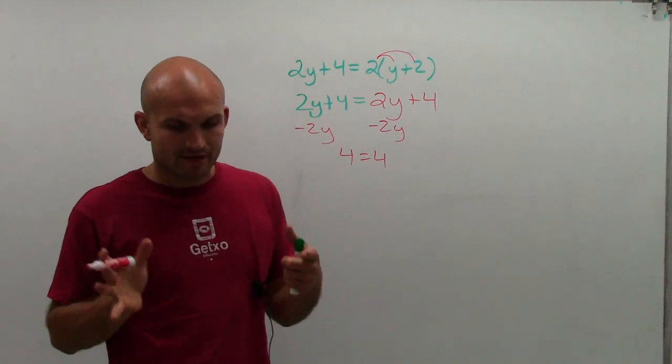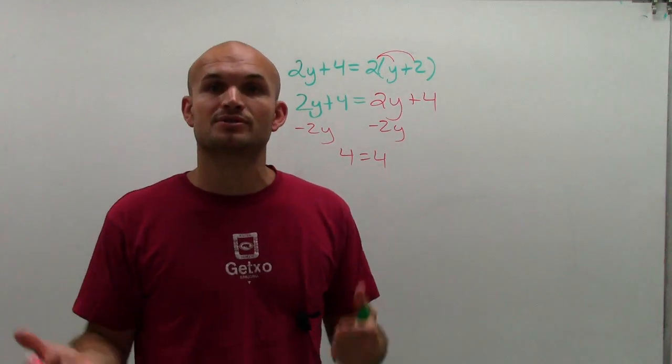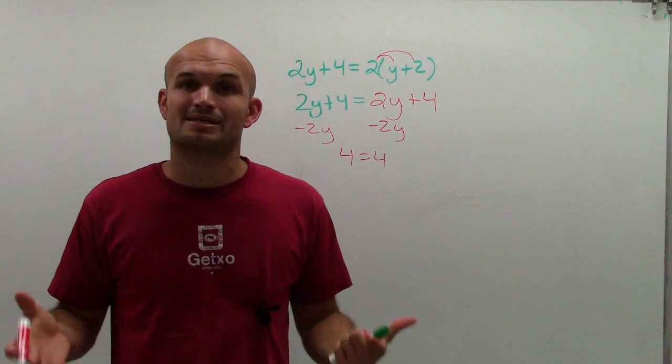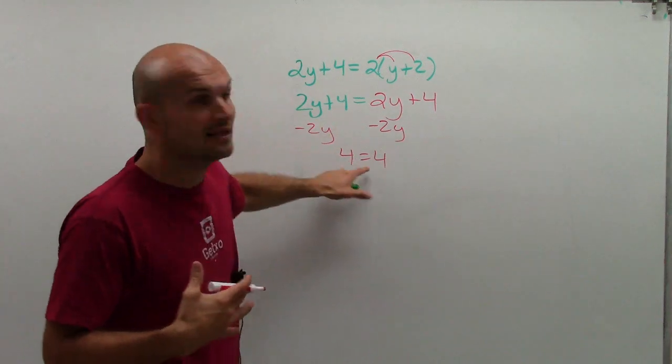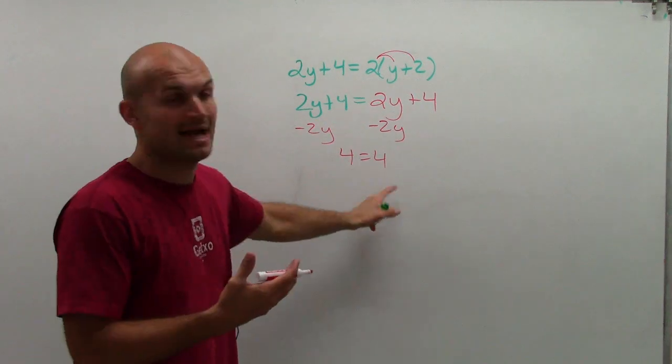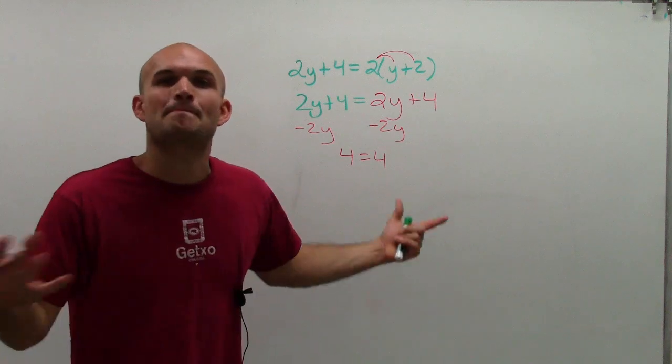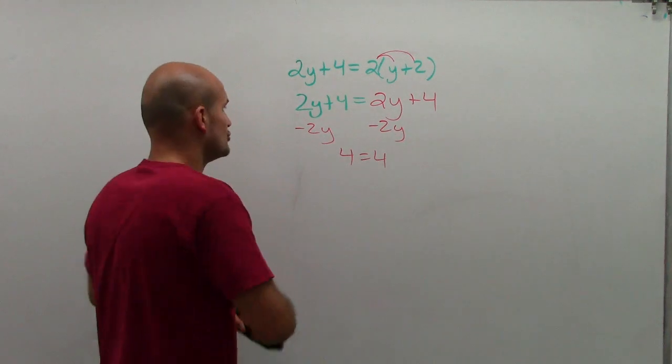Well, therefore, whenever you have a number equal to a number, or a variable equal to another variable, you're going to have infinitely many solutions. And because there's nothing else I can plug in, right? It doesn't say y equals a number, because it doesn't matter what y equals. It's always going to be true.